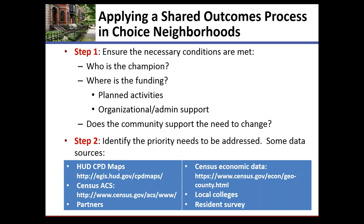Assuming you've got those necessary background conditions — and most Choice Neighborhoods do — the next step is to figure out what you're going to focus on, because communities are all different. While you might all share some common needs like housing rehabilitation or educational support, they're going to be in different varieties with different specific issues. It's very important as part of this collective impact process to really ground yourself in a detailed understanding of what's going on in this neighborhood and what things are more important than others to try to achieve first. There are a lot of great data sources to help figure that out.